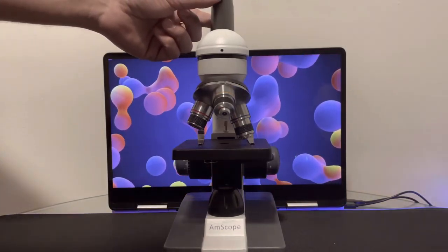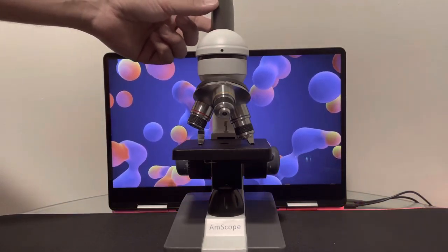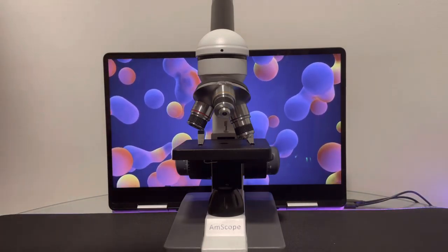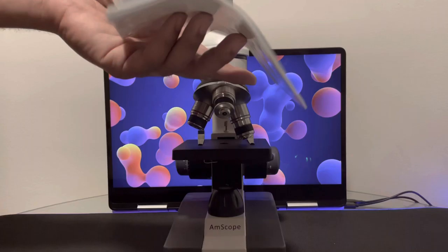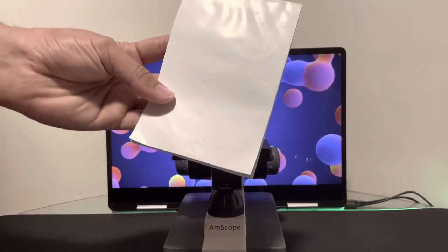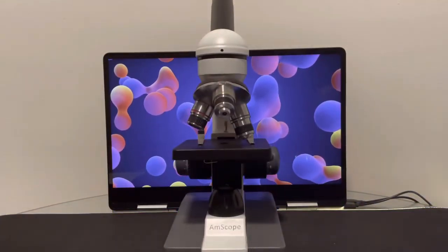And this compound microscope is supposed to be taken care of very well. Obviously, you don't want to drop it or anything. You want to keep it charged with batteries or plug it into the wall. And always use this type of paper to clean the lens. This is very important. You don't want to use anything else because it can cause scratching to the actual lens.